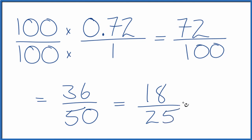We can't reduce this any further, so the decimal 0.72 is equal to the fraction 18/25. If you divide 18 by 25, or 36 by 50, or 72 by 100, you get 0.72. This is Dr. B. Thanks for watching.